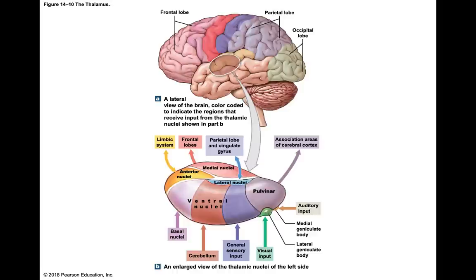The diencephalon sits at the top of the brainstem and helps to integrate sensory information with motor commands at a conscious level. Everything below — heart rate, respiratory rate, brainstem functions — those are unconscious. In the midbrain we reached the subconscious level. Now in the diencephalon we're at the conscious level.